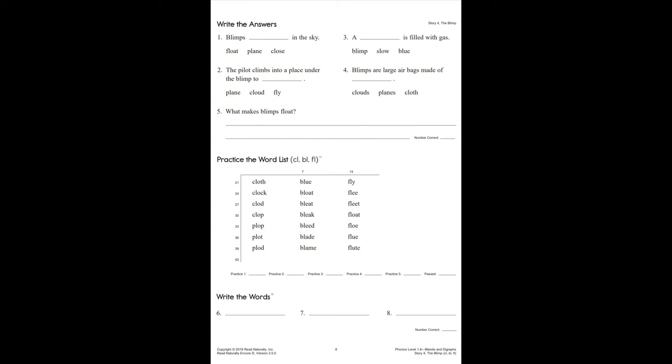Number three: A blank is filled with gas. Is it blimp, slow, or blue? Number four: Blimps are large airbags made of blank. Is it clouds, planes, or cloth?